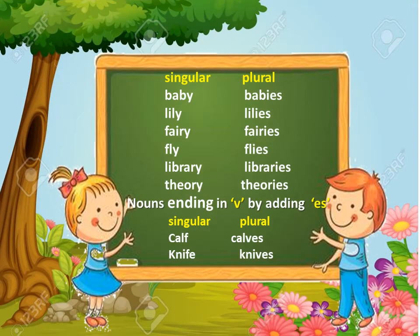Here are some more nouns ending in Y forming plurals with IES: baby → babies, lily → lilies, fairy → fairies, fly → flies, library → libraries, theory → theories.